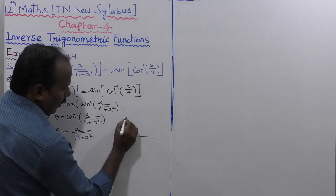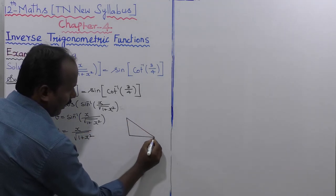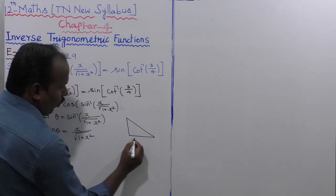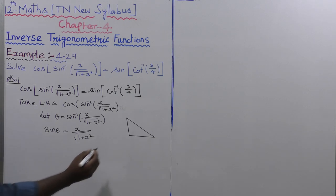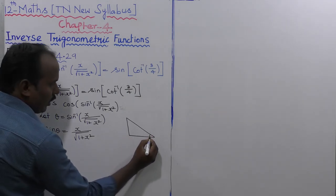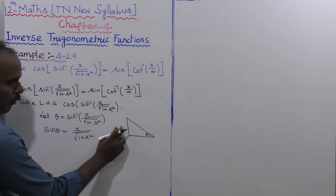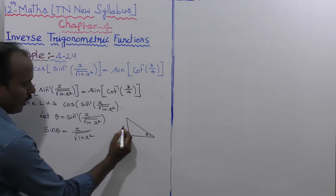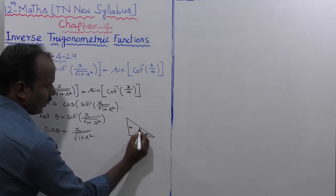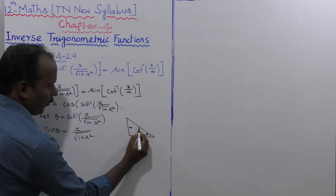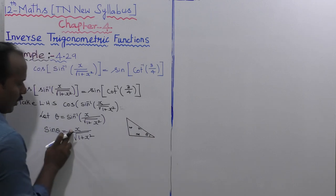Now take a right angle triangle. The opposite side, adjacent side, and hypotenuse are identified with respect to angle theta. Opposite side is x, hypotenuse is root of 1 plus x square, and the remaining adjacent side is 1.